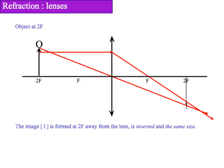This means that the image is formed at 2f away from the lens, is inverted so it is upside down, however it is the same size.